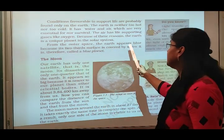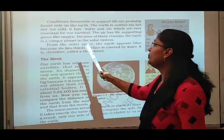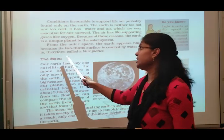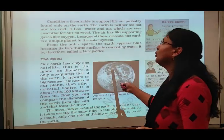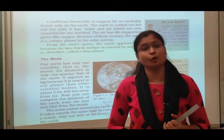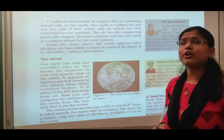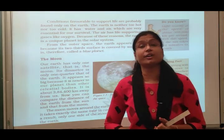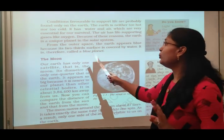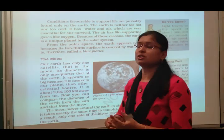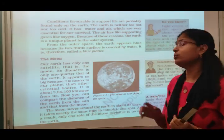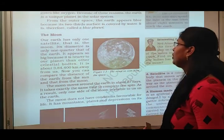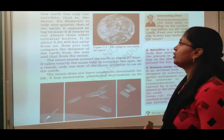From outer space, the earth appears blue because its two-thirds surface is covered by water. It is therefore called the blue planet. Water's color appears blue, that is why we call earth the blue planet.